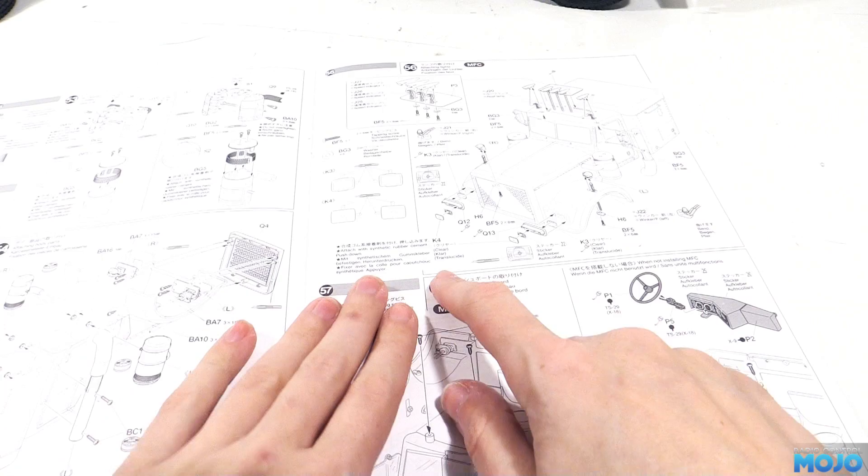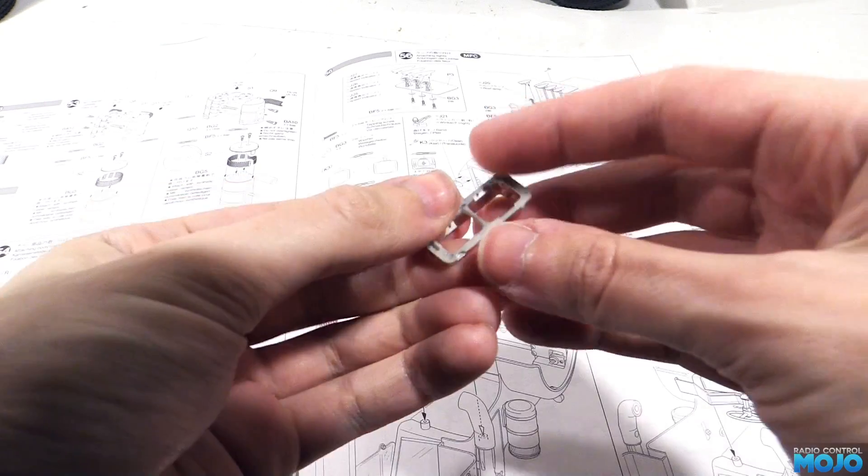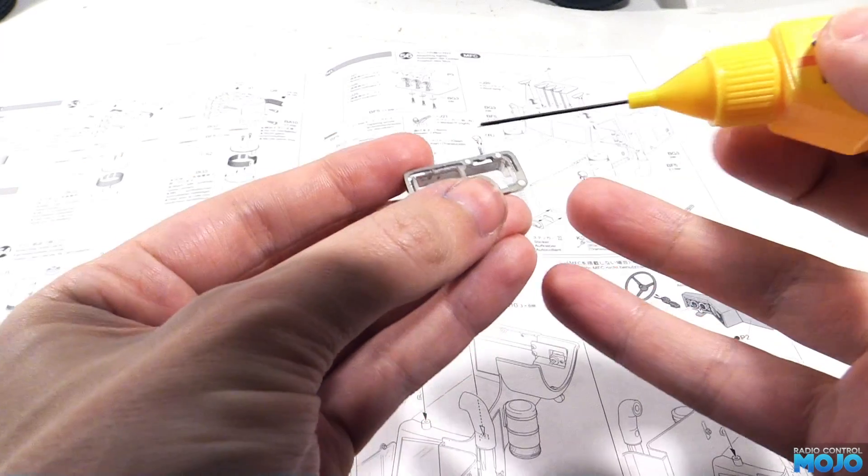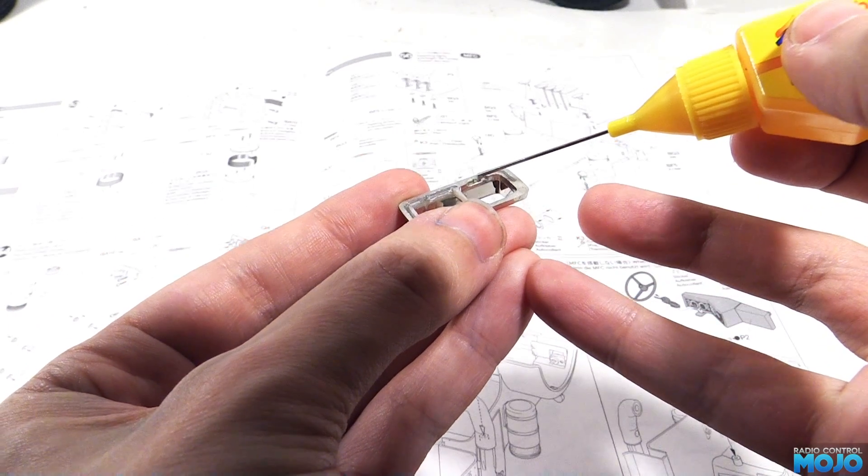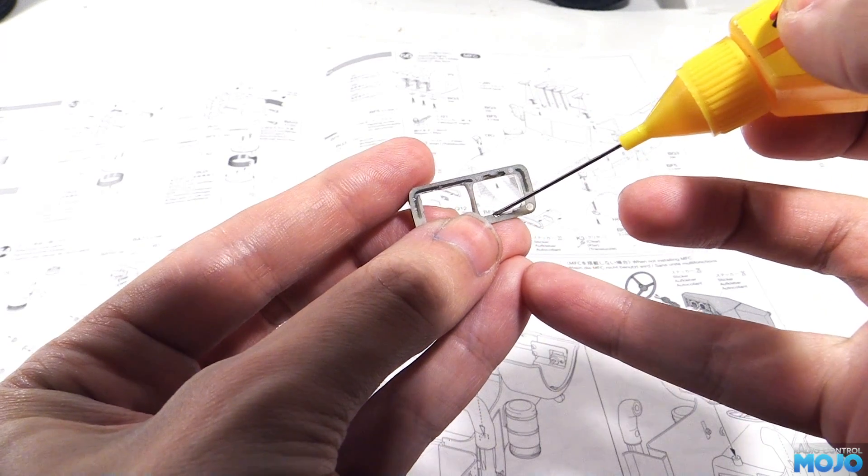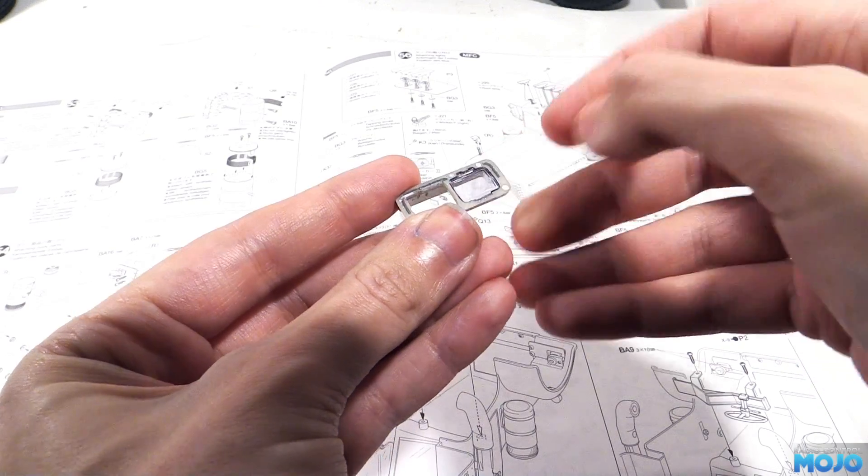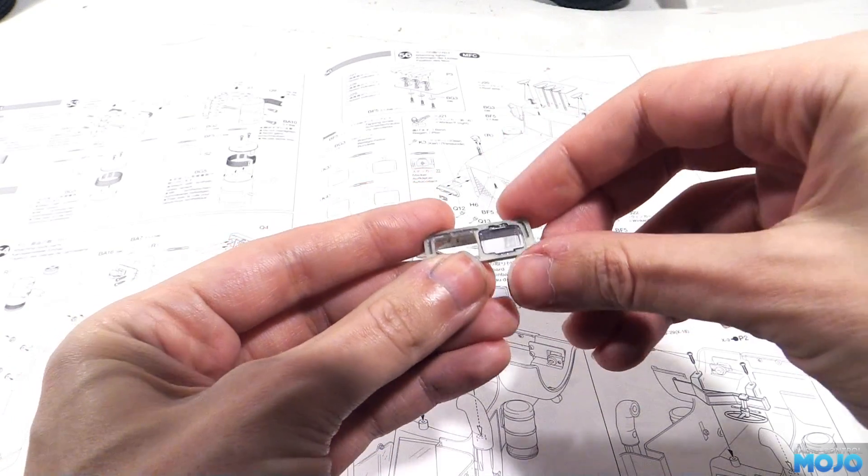Next we can glue the headlight lenses in. There's only one to fit on the side that goes over the stock light bucket, but we need to stick them in now so they're dry when we want to glue the surrounds in later. All we do is apply a little bit of poly cement in the slots and carefully drop the lens in place. We need to be careful not to get too much cement in there, we don't want it to leak out over the lens.